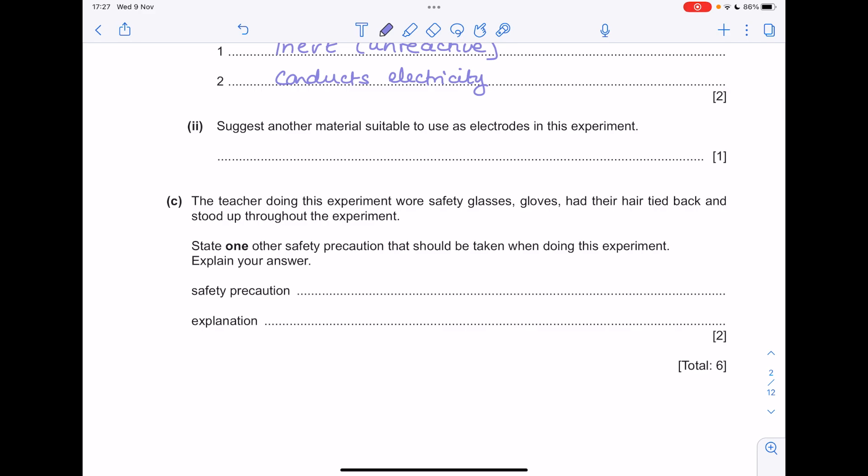Suggest another material suitable for use as electrodes in this experiment. The other one we tend to use is graphite, which remember is an allotrope of carbon.